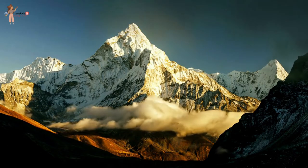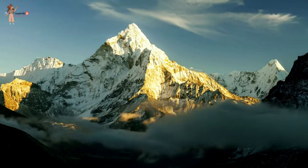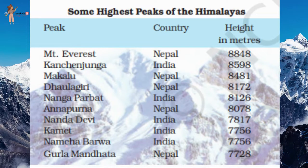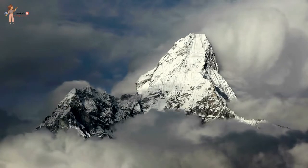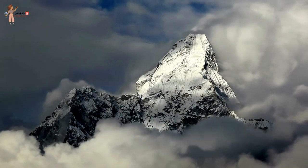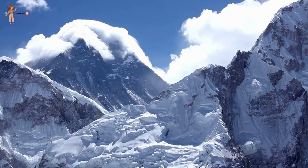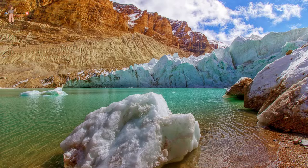The Himadri range is the most continuous range, consisting of the loftiest peaks with an average height of 6,000 meters and contains all the prominent Himalayan peaks. The folds of the Great Himalayas are asymmetrical in nature. The core of this part of the Himalayas is composed of granite. It is perennially snow-bound and a number of glaciers descend from this range.